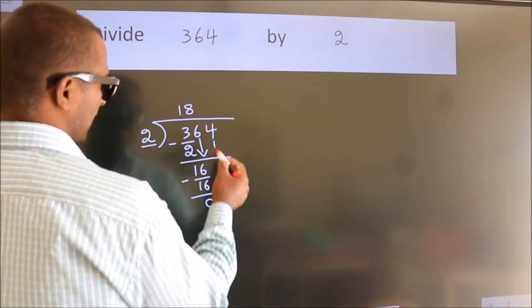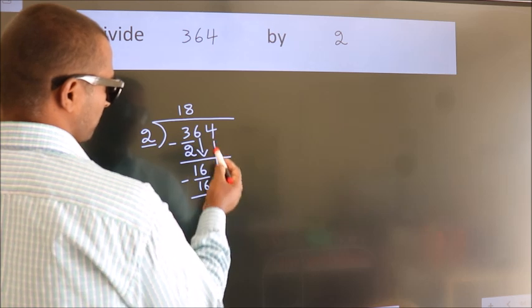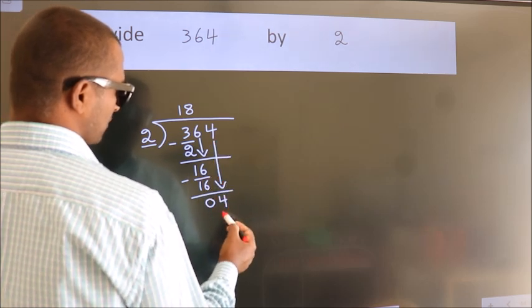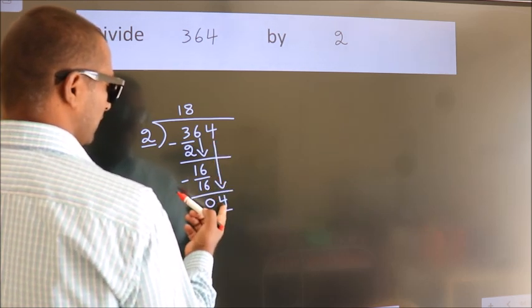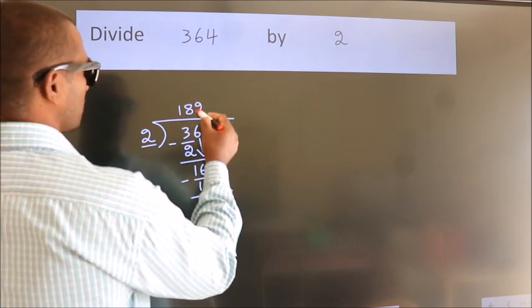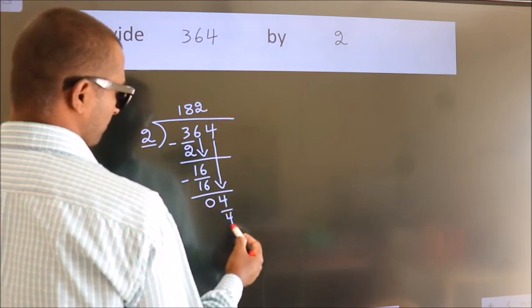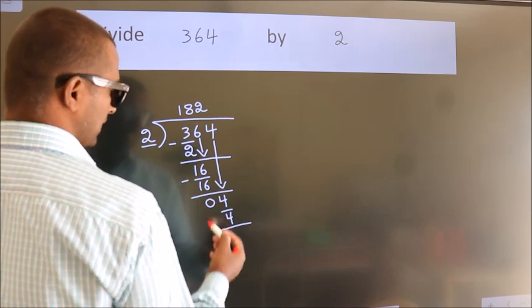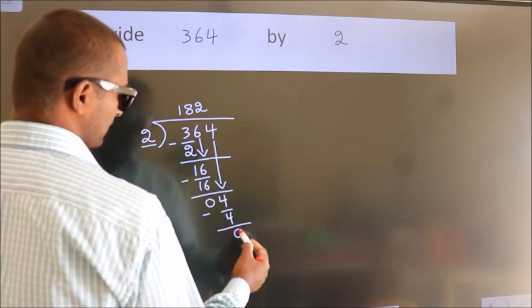After this, bring down the beside number. So 4 down, so 4. When do we get 4 in 2 table? 2 times 2 is 4. Now we subtract. We get 0.